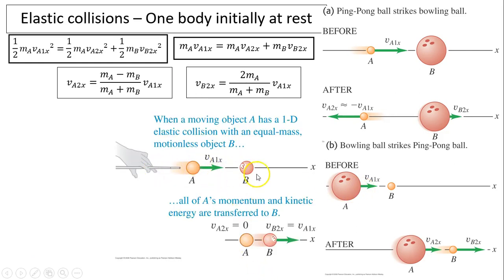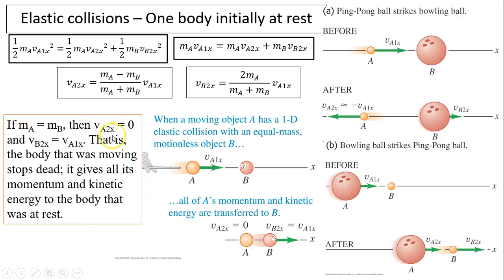Another special case: what if A and B have the same mass? If MA minus MB equals 0, then the velocity of A after collision becomes 0. The velocity of B becomes equal to the velocity of A before the collision. So when MA equals MB, the moving body stops dead and transfers all its momentum and kinetic energy to the body that was at rest.